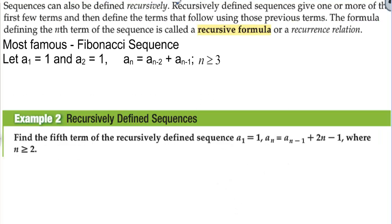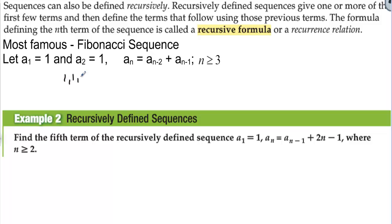Sequences can also be defined recursively. Recursively defined sequences give one or more of the first few terms, then define subsequent terms using those previous terms. This formula is called the recursive formula or recurrence relation. The most famous is the Fibonacci sequence: if A sub 1 equals 1 and A sub 2 equals 1, each next term is the sum of the two before it — giving 1, 1, 2, 3, 5, 8, and so on forever.